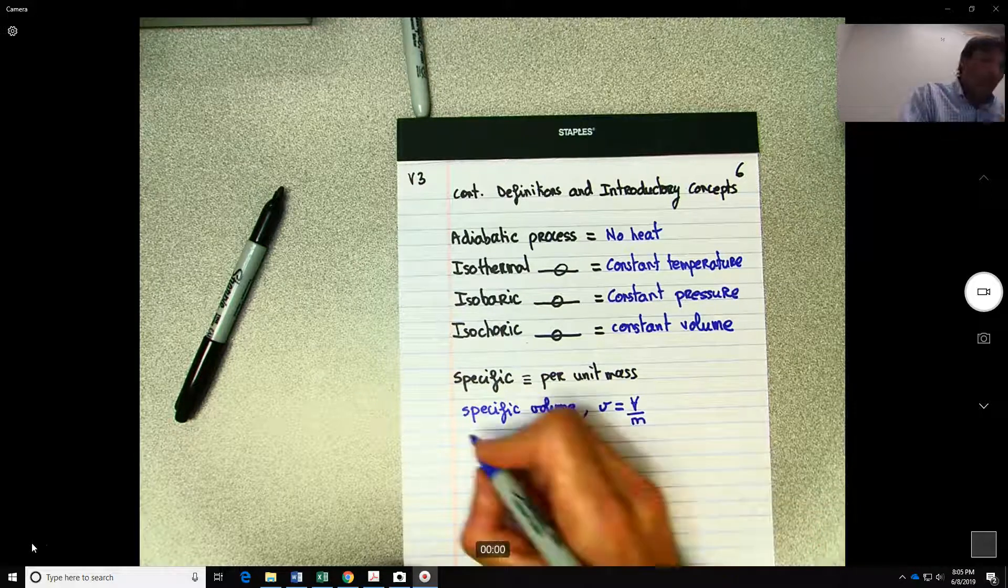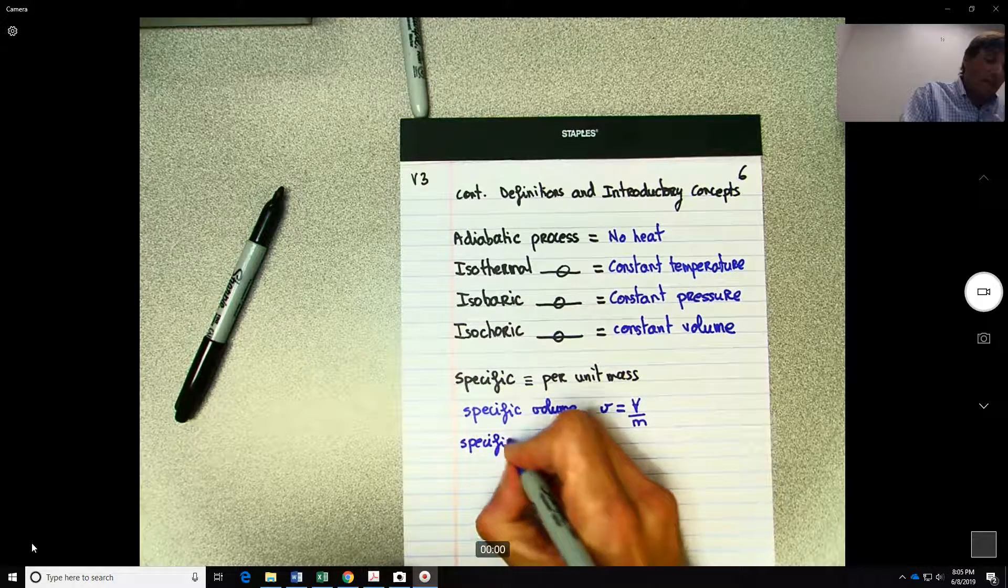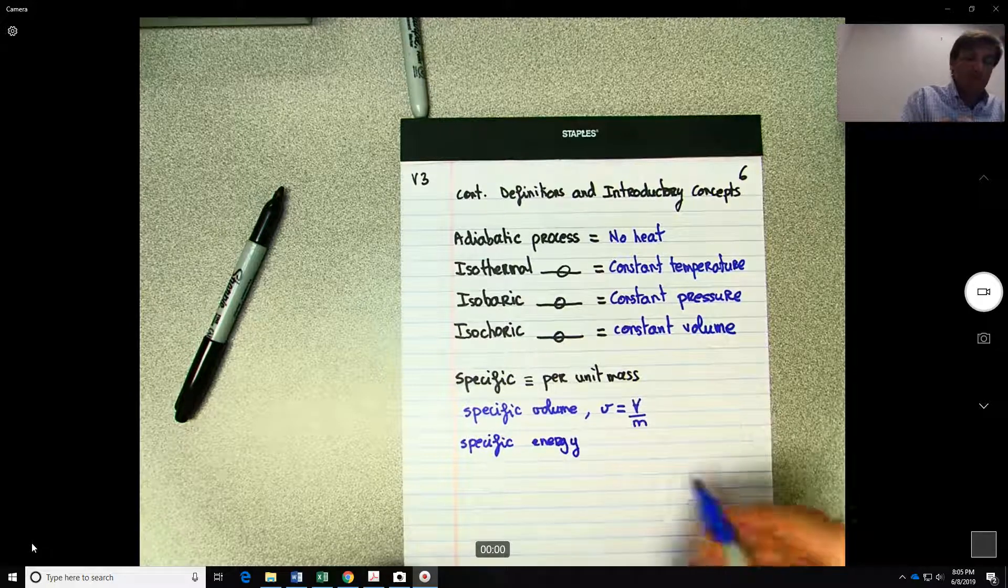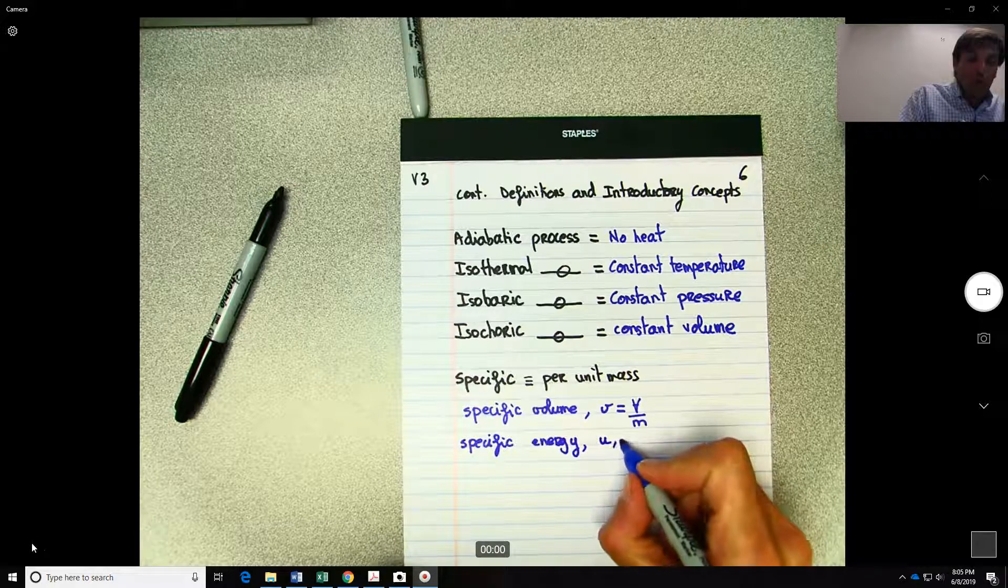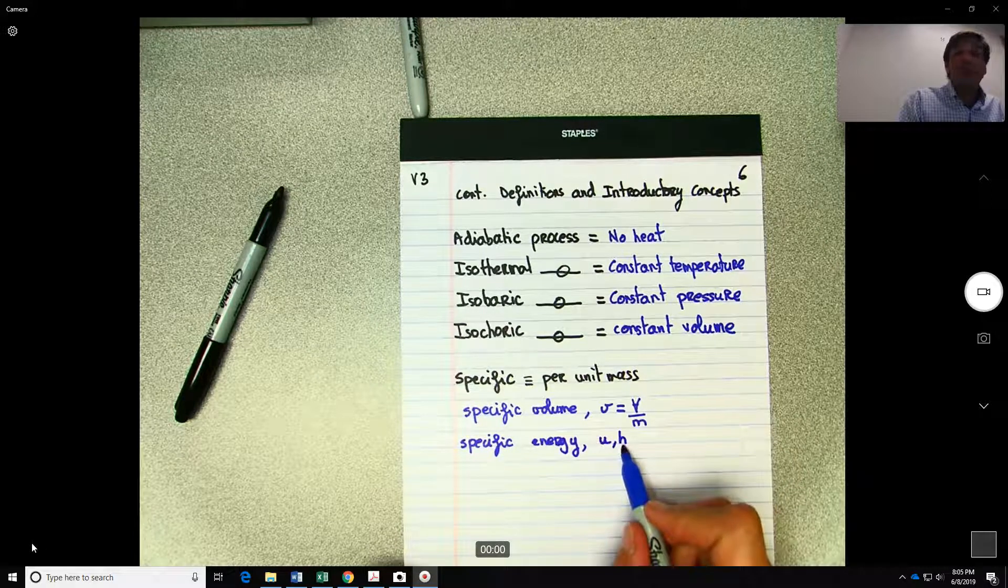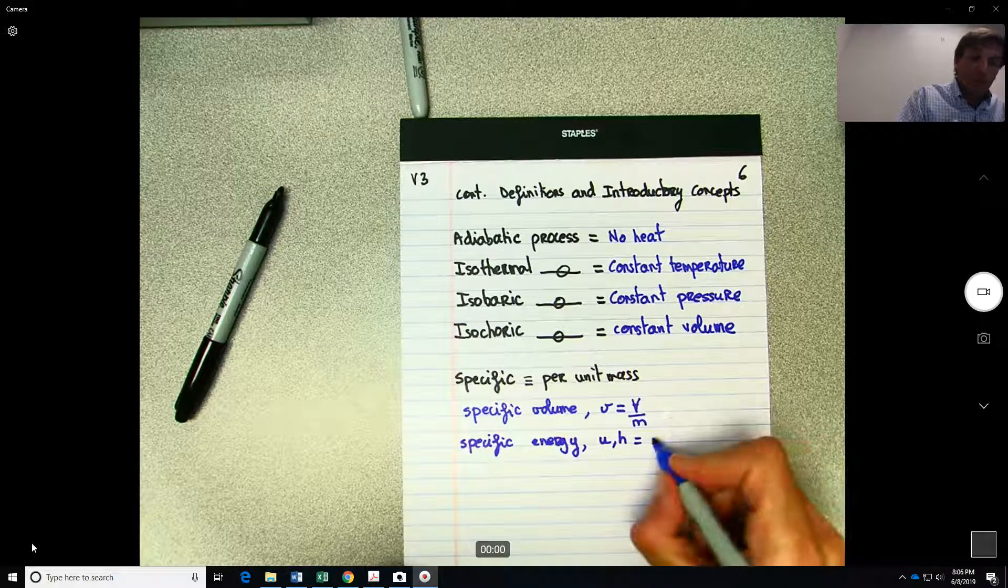So in this case volume. Then you will have specific energy in which they will use probably little u or little h. This is internal energy, this will be enthalpy. We'll study that later on.